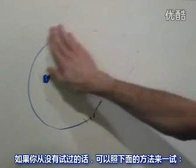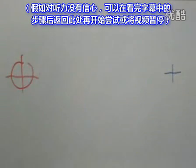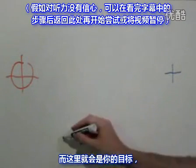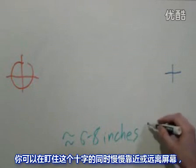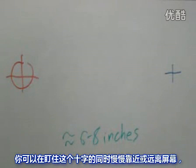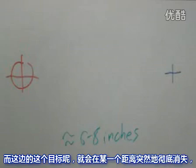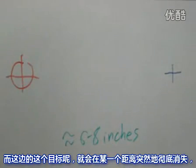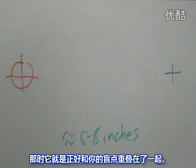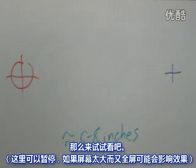If you haven't done this yet, you can try it like this. Close your right eye and stare at the cross with your left eye. This will be your target. If you get yourself the right distance from the screen — just move towards and away from the screen slowly while focusing on the cross — suddenly the target will disappear at a certain point. That's the point where it perfectly coincides with your blind spot. Go ahead and try that.